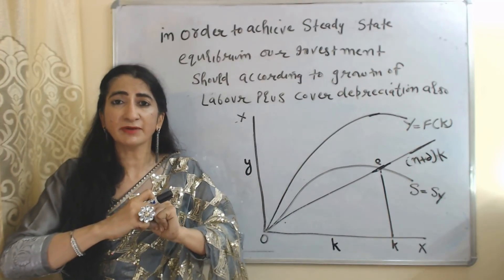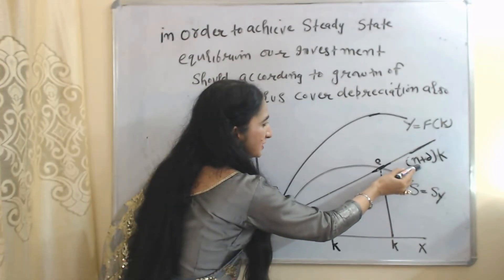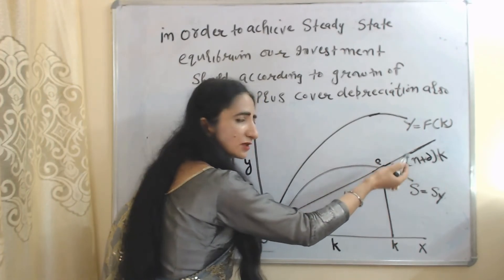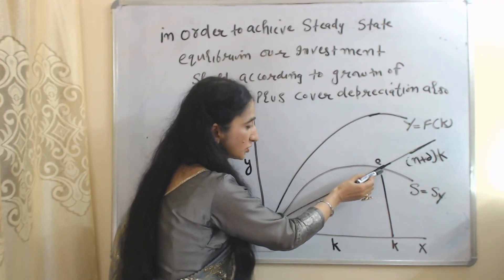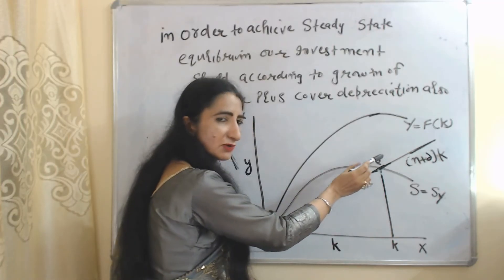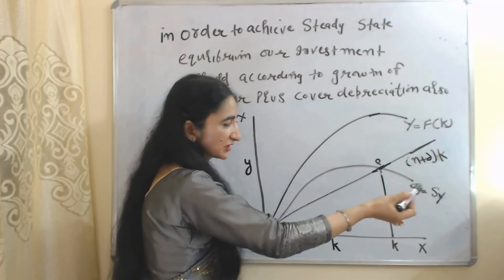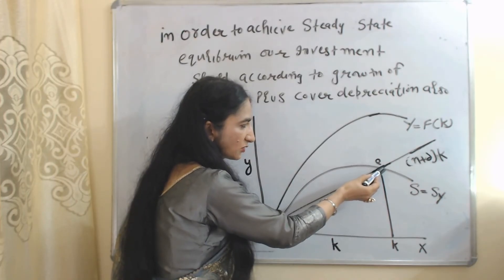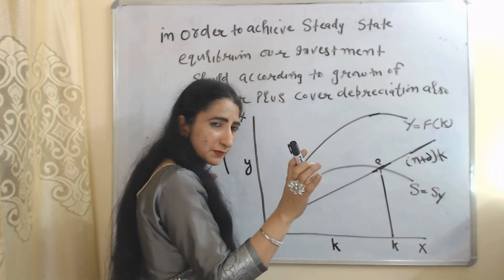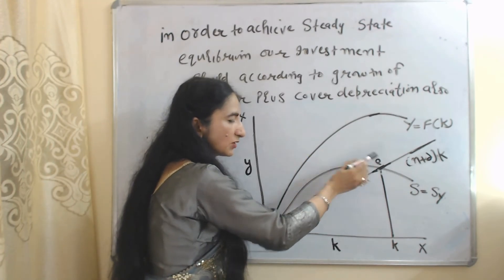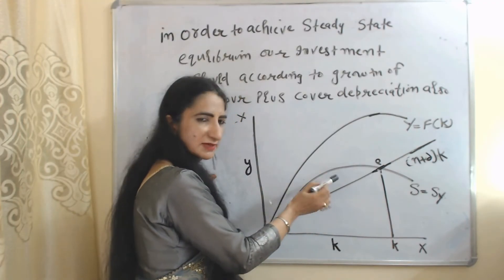In the updated diagram, we add n, representing growth of population or growth of labor. Point E is called the steady state growth equilibrium point because at E, growth of population and depreciation together equal investment — meaning we are investing according to population growth and our investment also covers depreciation. That is why E is the steady state growth equilibrium point.